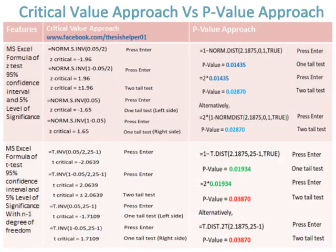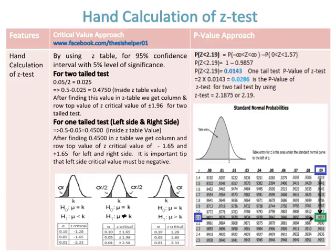Comparing MS Excel formulas of critical value approach versus p-value approach for z-test and t-test for two-tail test, one-tail left, and one-tail right. For hand calculation of the z-test using the z-table at the 95% confidence interval with five percent level of significance, for a two-tailed test: 0.05 divided by 2 equals 0.025; subtract 0.025 from 0.5 to get 0.4750, which is looked up inside the z-table.